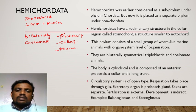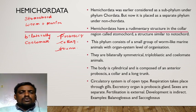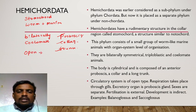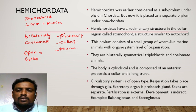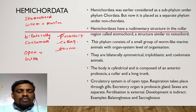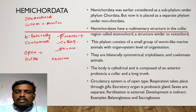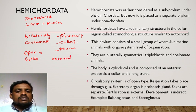The circulatory system is of open type. Respiration takes place by the gills. The excretory organ is the proboscis gland. Sexes are separated and fertilization is external. Development is indirect, with a larval stage.